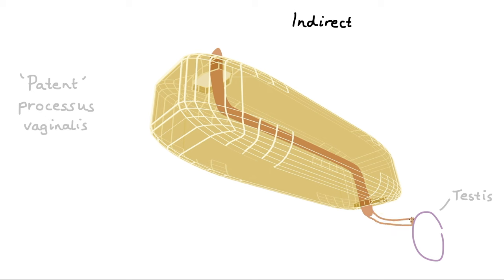To give you an idea of what that means, we're going to draw out a single testis here and attach the spermatic cord. So this is what the processus vaginalis is supposed to look like, tightly adhered to the cord and the testis. A patent processus vaginalis looks like this. The result is there's this continuous opening between the peritoneal cavity and the testes.